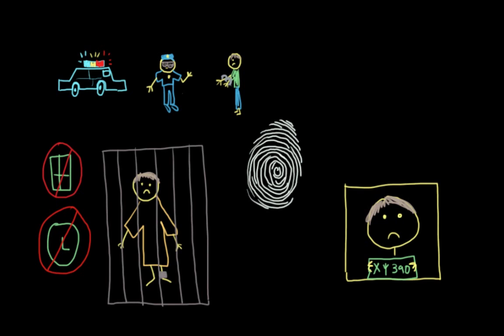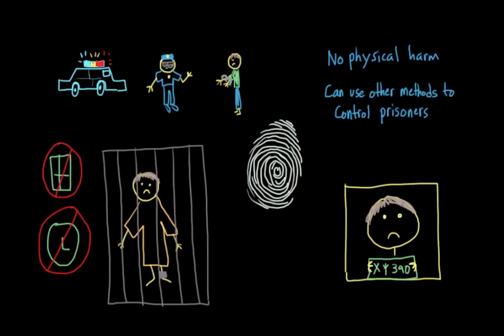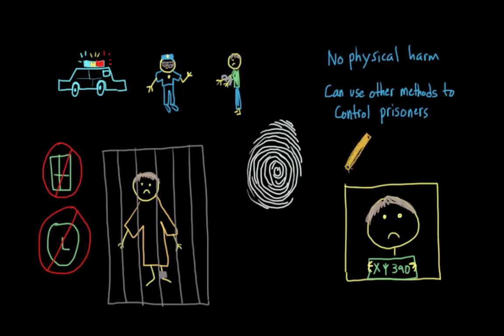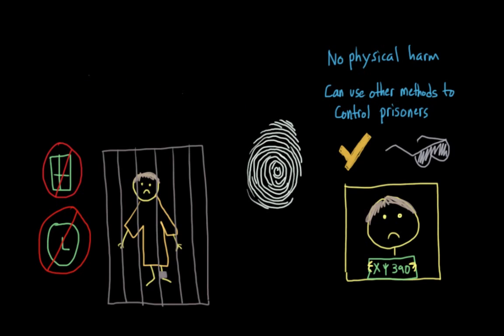Zimbardo had also met with the participants playing the guards before the start of the experiment. He told them that they were not supposed to physically harm the prisoners. They could, however, try to create a situation that would lead to fear or loss of privacy and control or loss of individuality. The guards were also given uniforms, batons which were supposed to be for threats of physical violence and not actual physical violence, and mirrored sunglasses. They were instructed to refer to the prisoners by their numbers and not by their names. Basically, these guards were free to do whatever was necessary to maintain law and order, except for physically harm the participants.